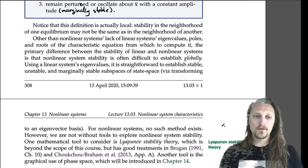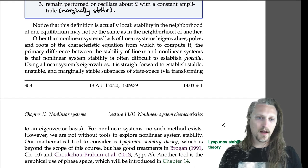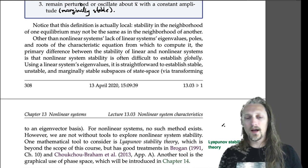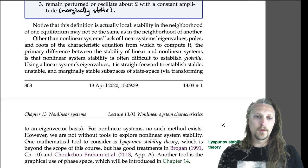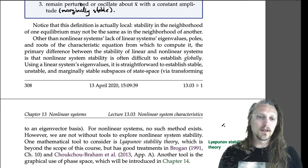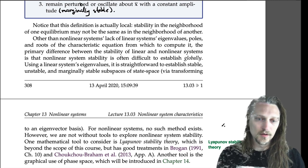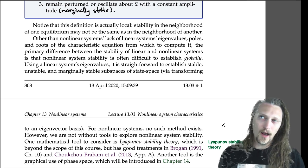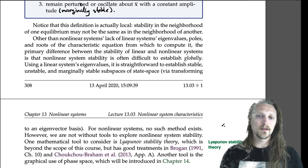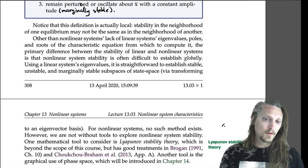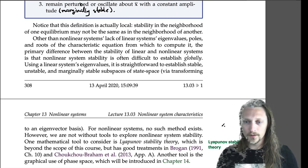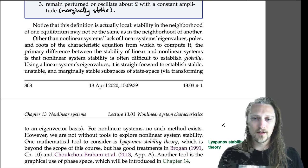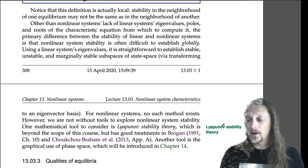Using a linear system's eigenvalues it is straightforward to establish stable, unstable, and marginally stable subspaces of the state space by transforming to the eigenvector basis. Eigenvectors corresponding to stable eigenvalues span the stable subspace, marginally stable ones the marginally stable subspace, and unstable eigenvector-eigenvalue pairs correspond to the unstable subspace. For nonlinear systems, no such method exists — we can't do a simple basis transformation into the eigenvector basis because there are no eigenvectors defined.